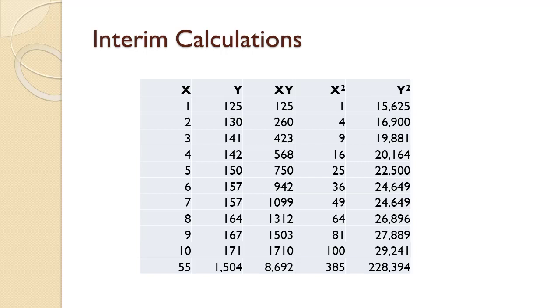Next we calculate Y squared. 125 squared is 15,625. 130 squared is 16,900. 141 squared is 19,881, and so on. Finally, we compute the column totals.